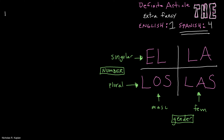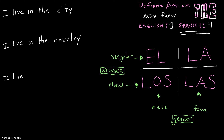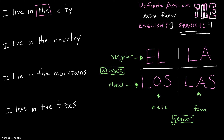In the abstract it doesn't make much sense, so let's look at four examples. I'm going to use the same verb each time for clarity. We can say: I live in the city, I live in the country, I live in the mountains, I live in the trees. So we have 'the' four times, and we're going to use el, la, los, or las — each for a different reason. We want to look at the noun.